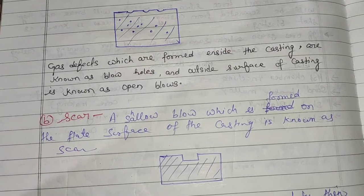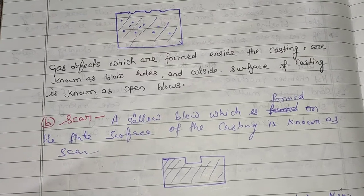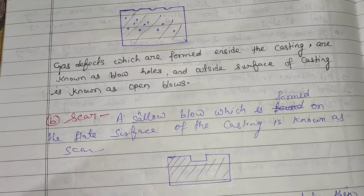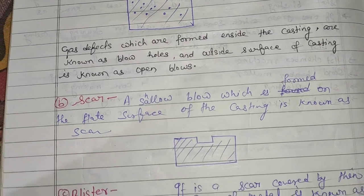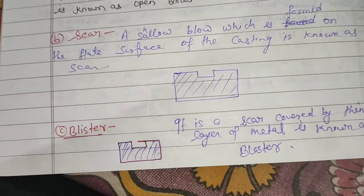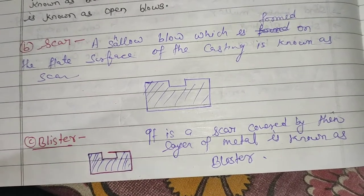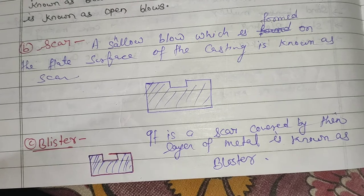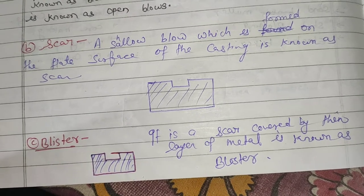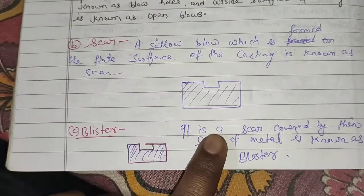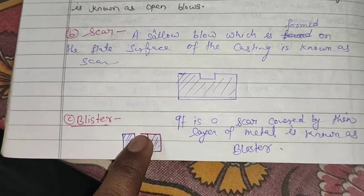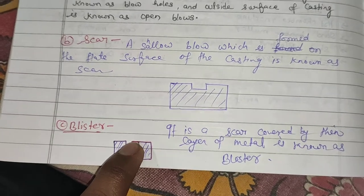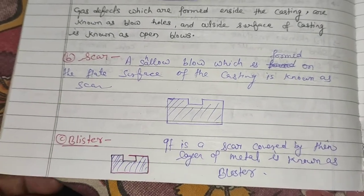The second defect is a scar or shallow blow, which is formed on the flat surface of the casting. The third defect is a blister — a scar covered by a thin layer of metal is known as a blister, as seen in the diagram. Due to this thin layer, the defect changes from a scar to a blister.